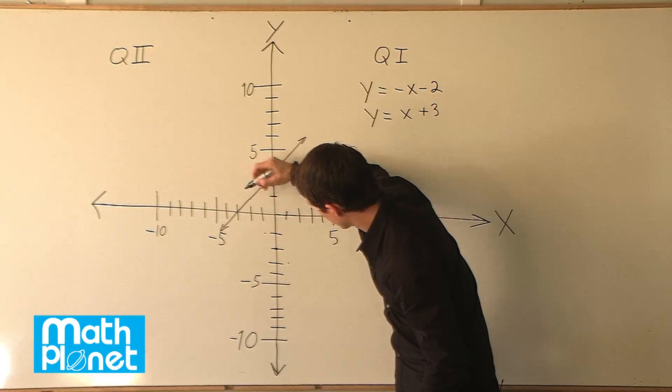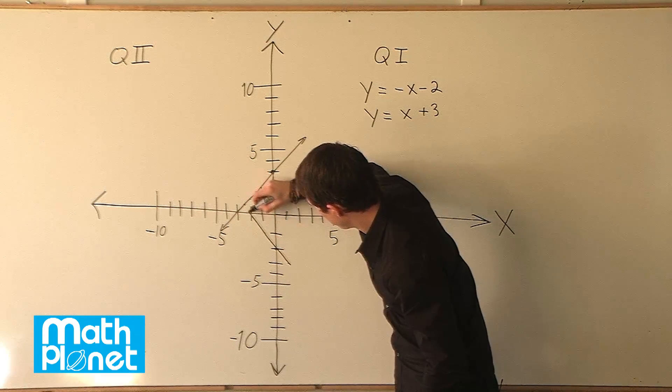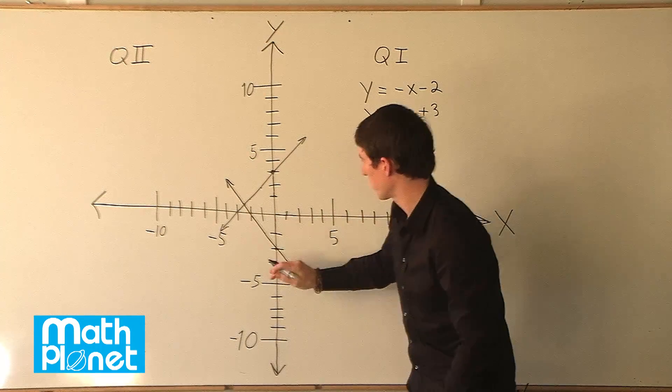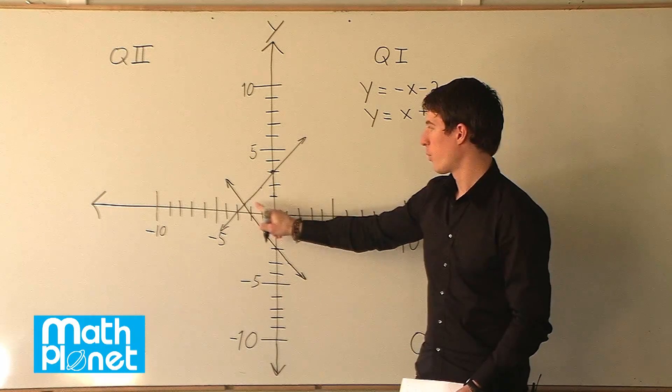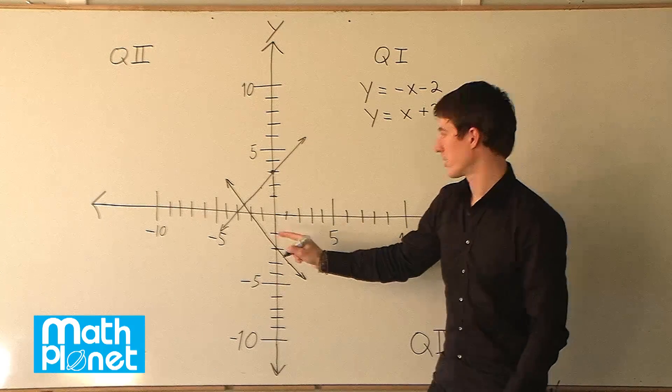So it looks like it crosses right about here. We'll draw this line. It's about as accurate as we can be here. So now we can see where these intersect. So luckily it comes out to a pretty nice number. We don't have to guess too much.